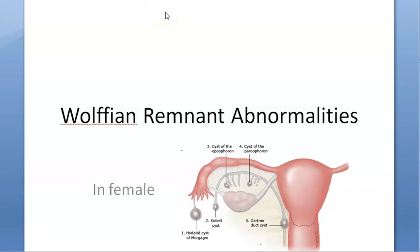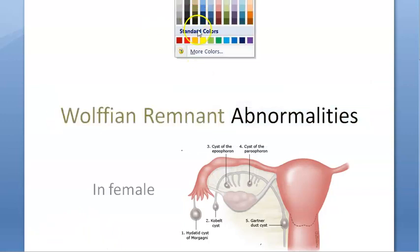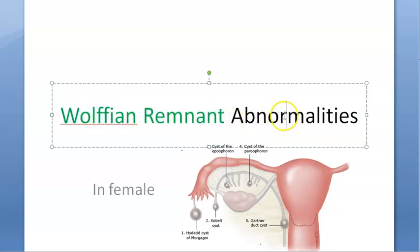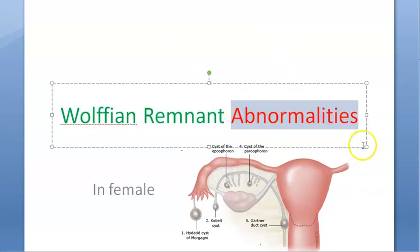Hello. In this video we want to look at the topic of Wolffian remnant abnormalities. So in a woman, the Wolffian remnants will be there — this is something that is normal, because the Wolffian duct gives rise to the male reproductive parts. So in a woman these Wolffian remnants will be there. Now, they are asking you in the exam about the abnormalities of these remnants.